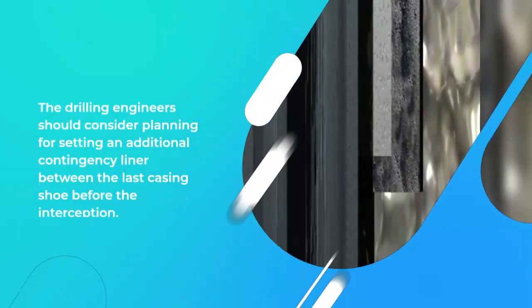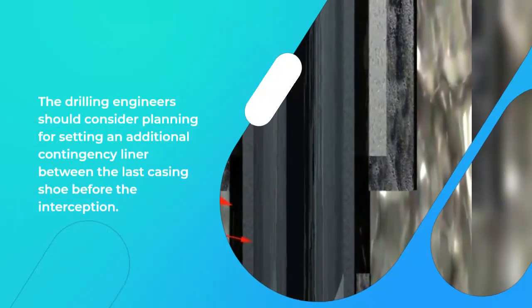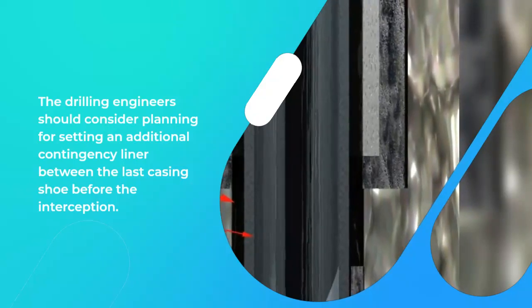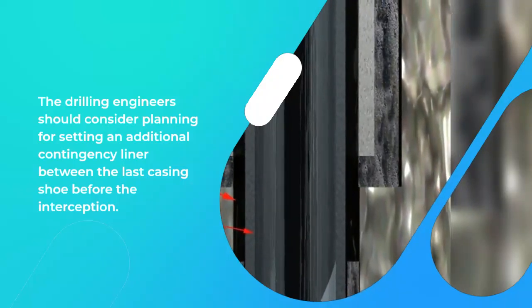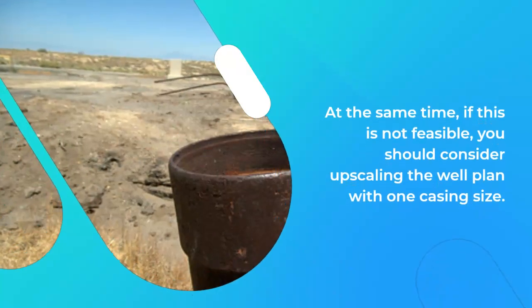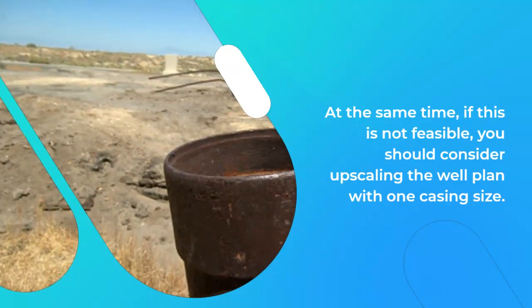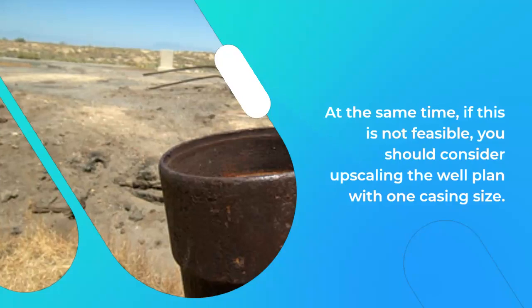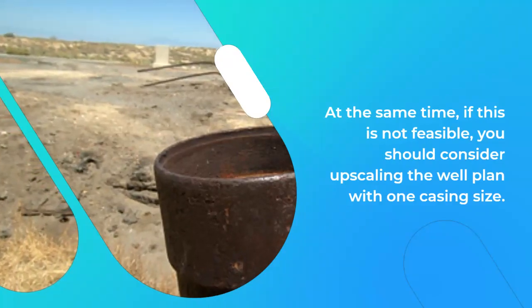The drilling engineers should consider planning for setting an additional contingency liner between the last casing shoe before the interception. At the same time, if this is not feasible, you should consider upscaling the well plan with one casing size.